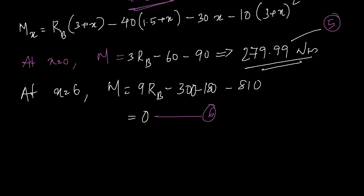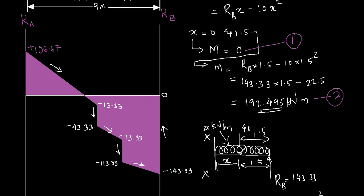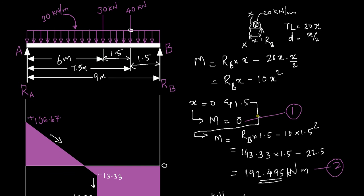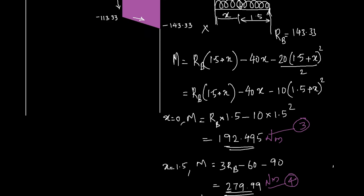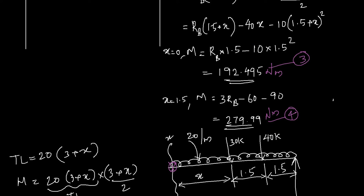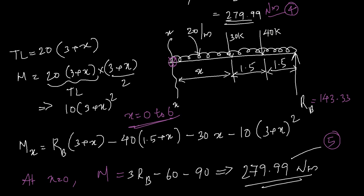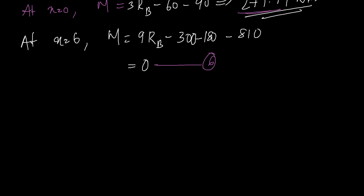Here is a tip: you should make sure you get 0 at either end — the first and last values should be 0. Your 2nd and 3rd will be the same: 192.495. Your 4th and 5th will also be the same: 279.99. And the last value will be 0.